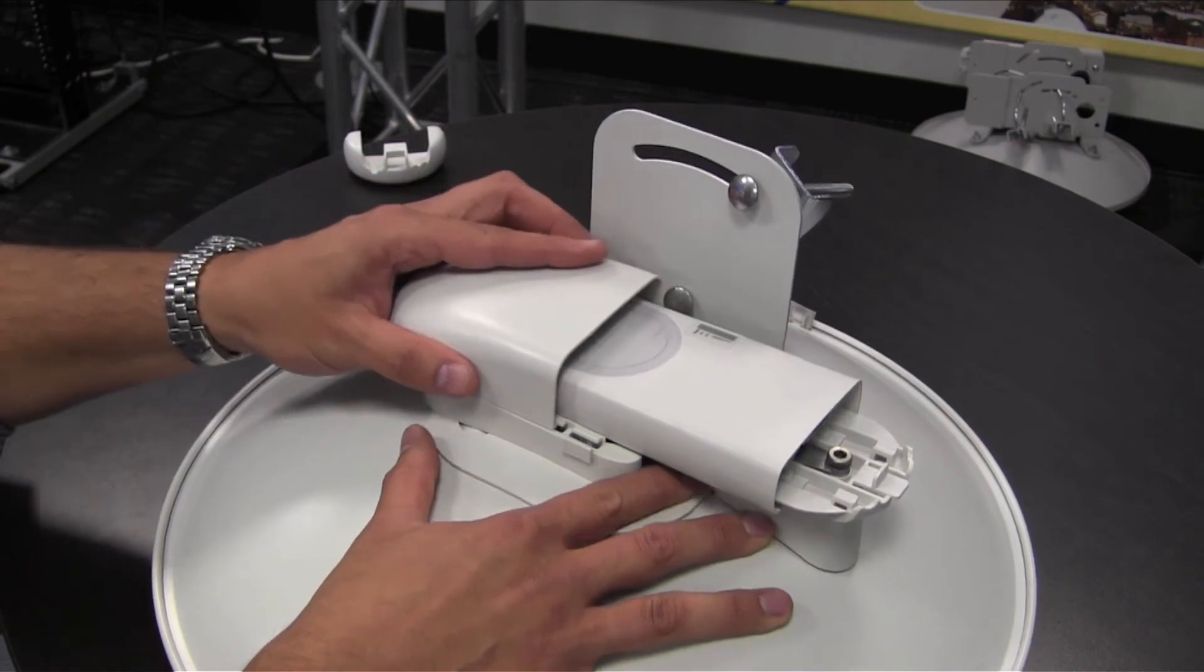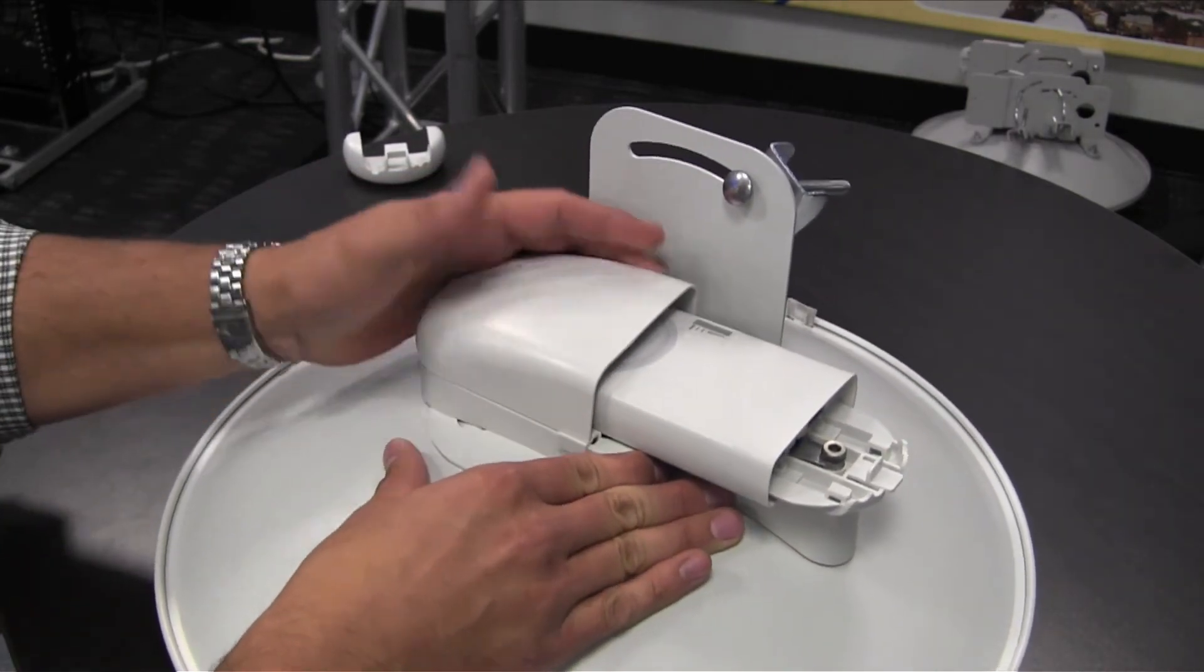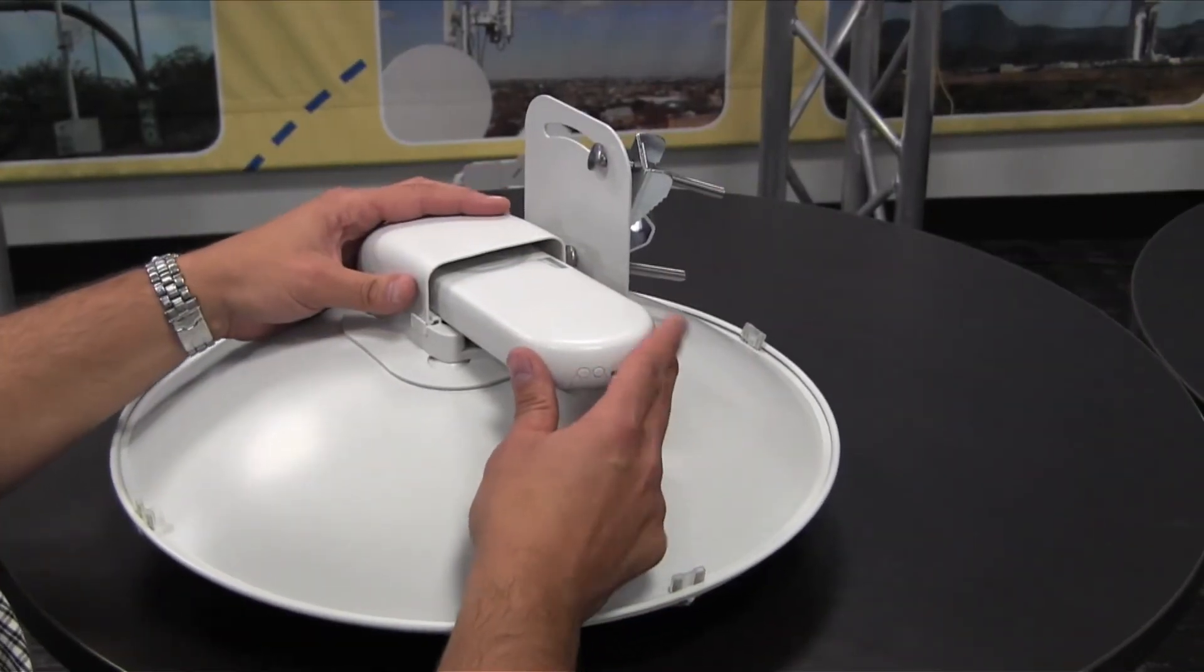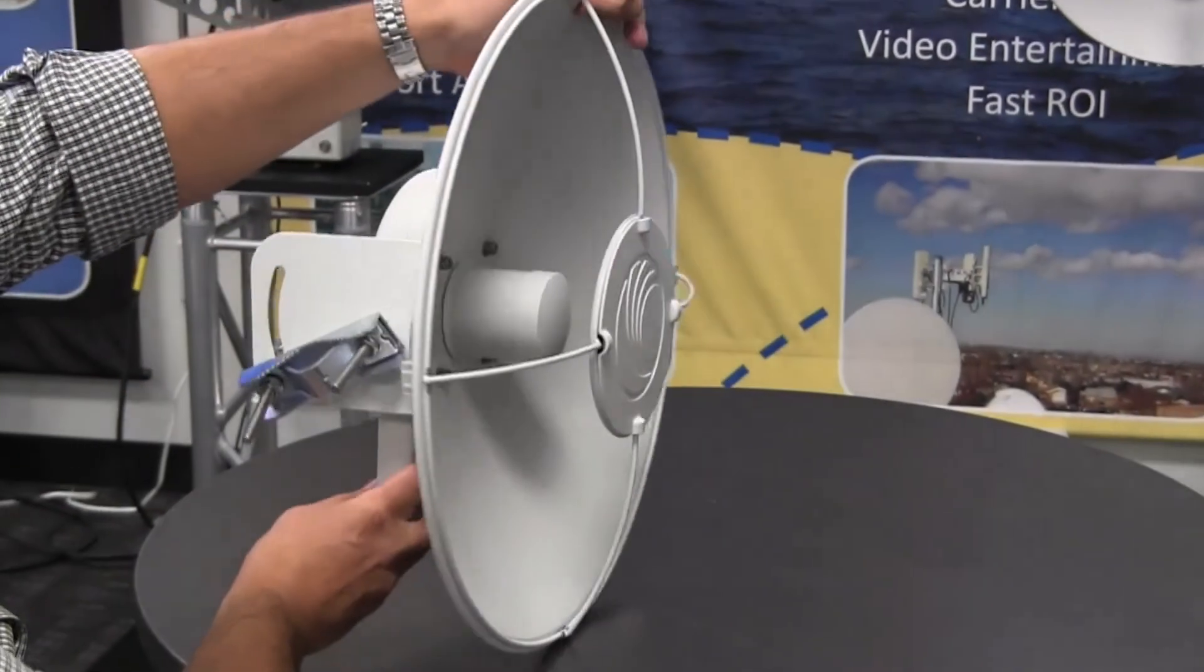Slide on the radio cover being sure not to crimp the RF cables. Replace the radio cap. This completes the assembly of the Force 110.